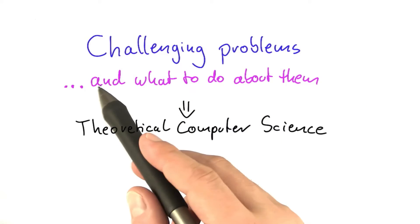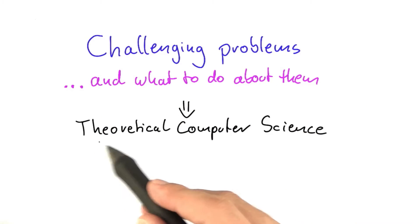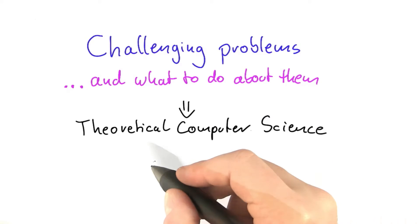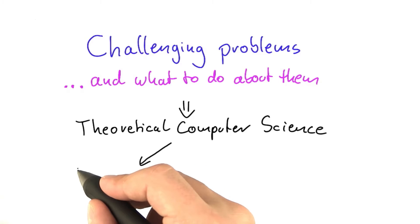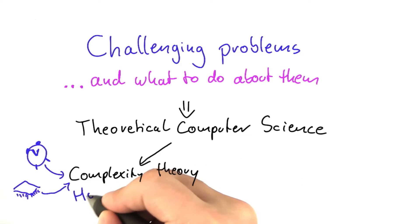The part of computer science that deals with challenging problems is called theoretical computer science. The first part of theoretical computer science that we will be looking at is called complexity theory, and complexity theory is the science of how much,